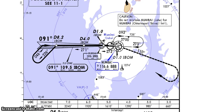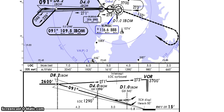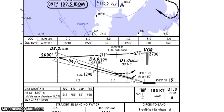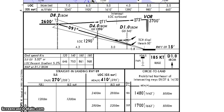Thereafter, we'll commence descent as per the glide slope till DDA. Missed approach point is at 1 ILS DME. In case of glide slope unserviceable, we'll descend as per the DME altitude reference table. High intensity approach lighting system is available — PAPI to the left.